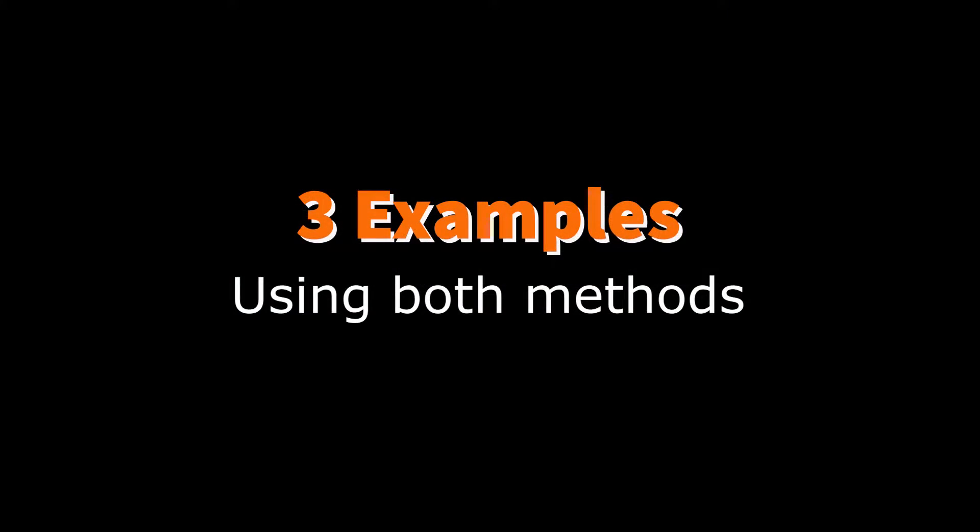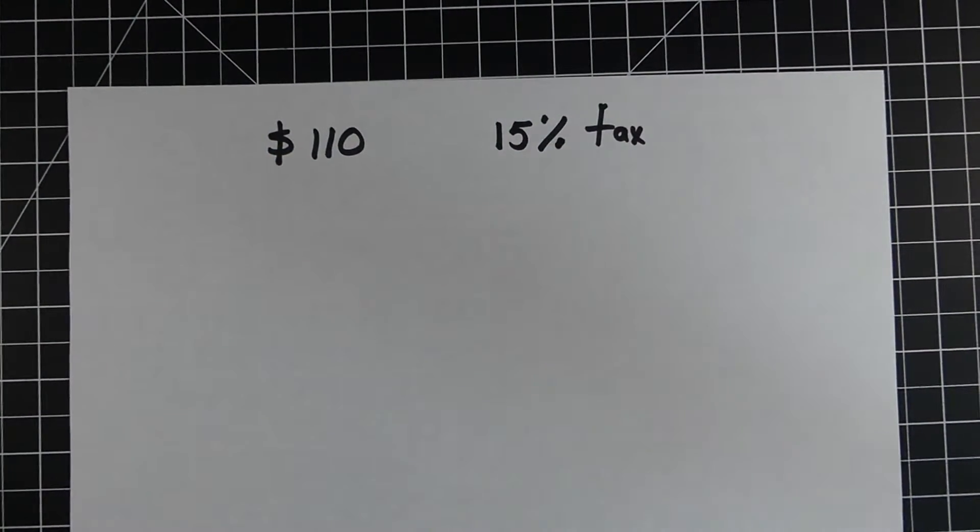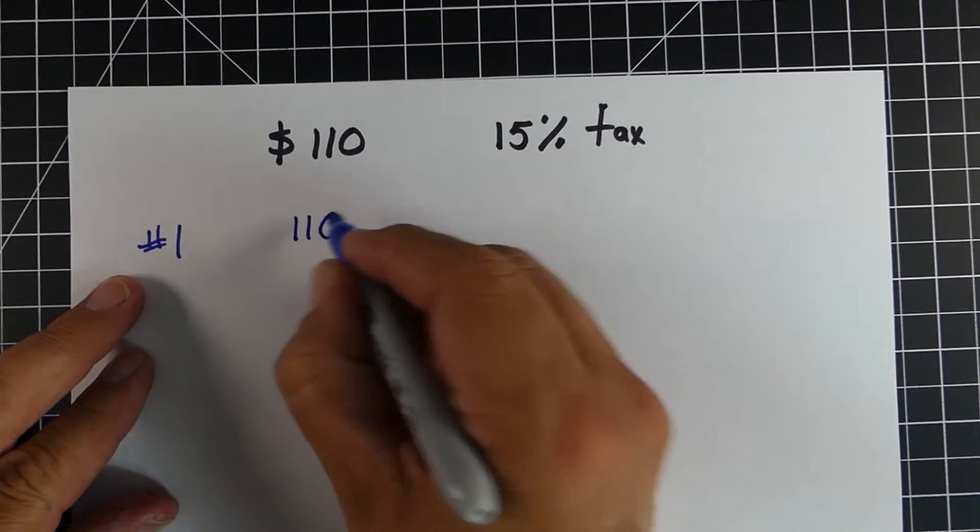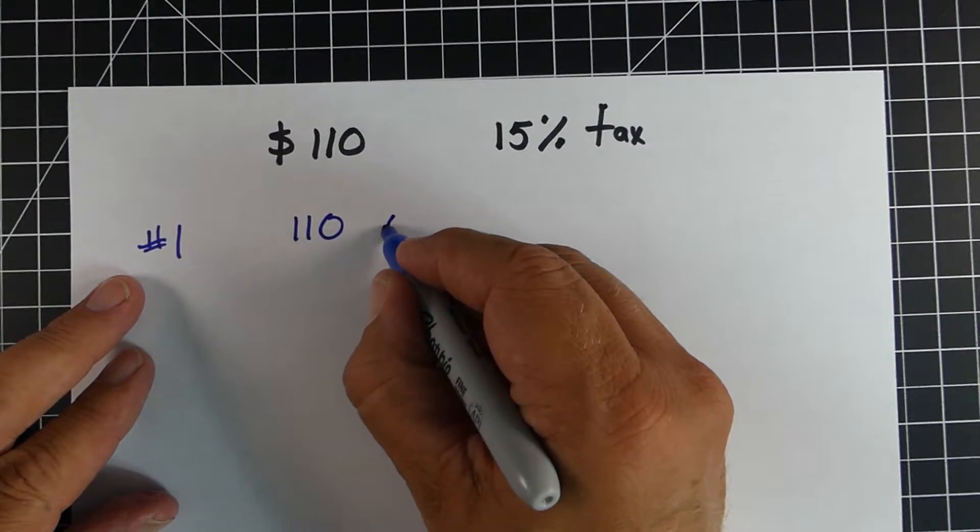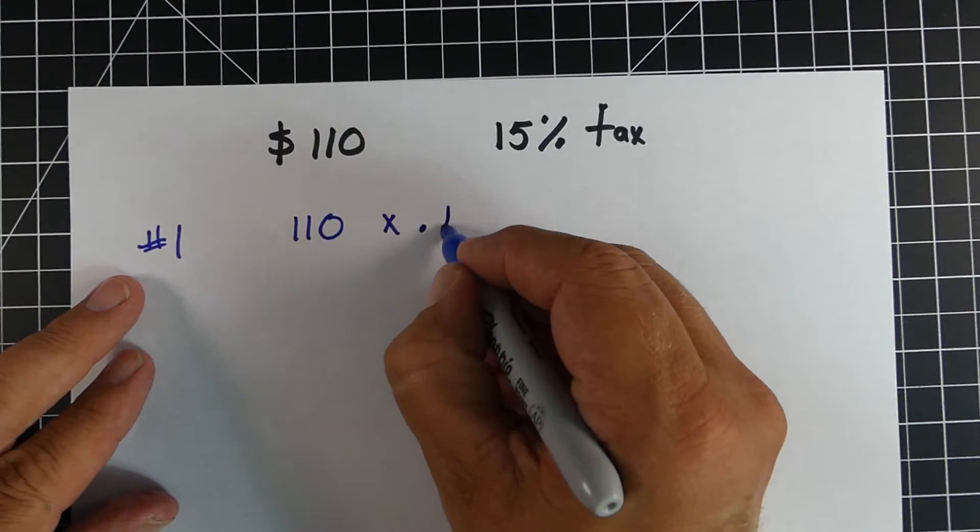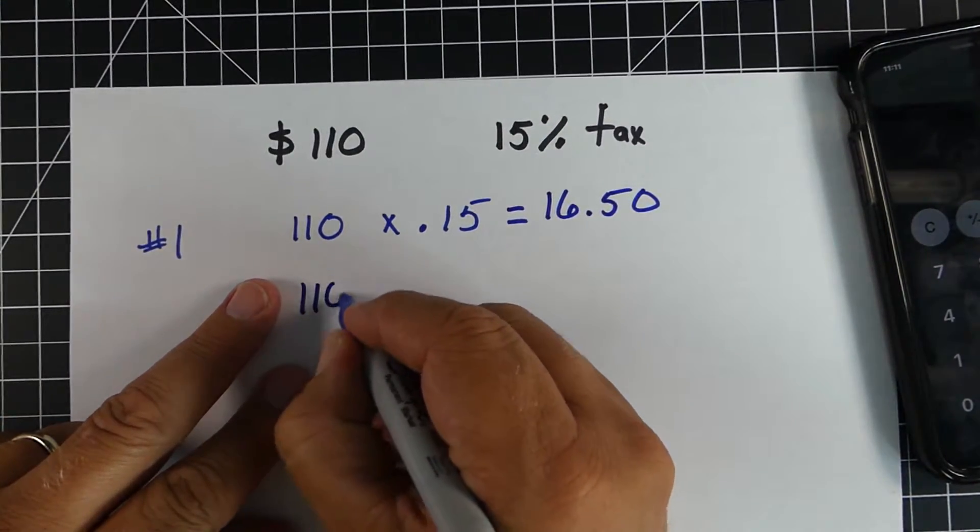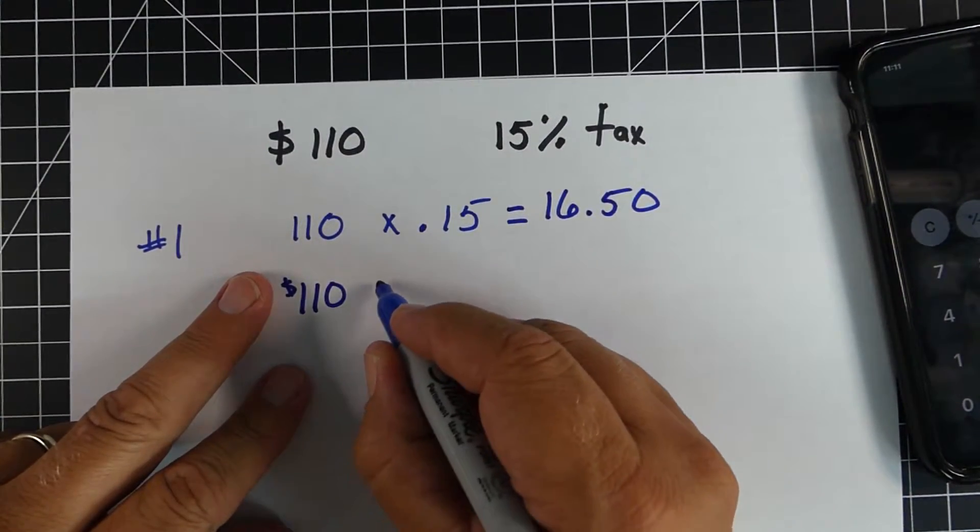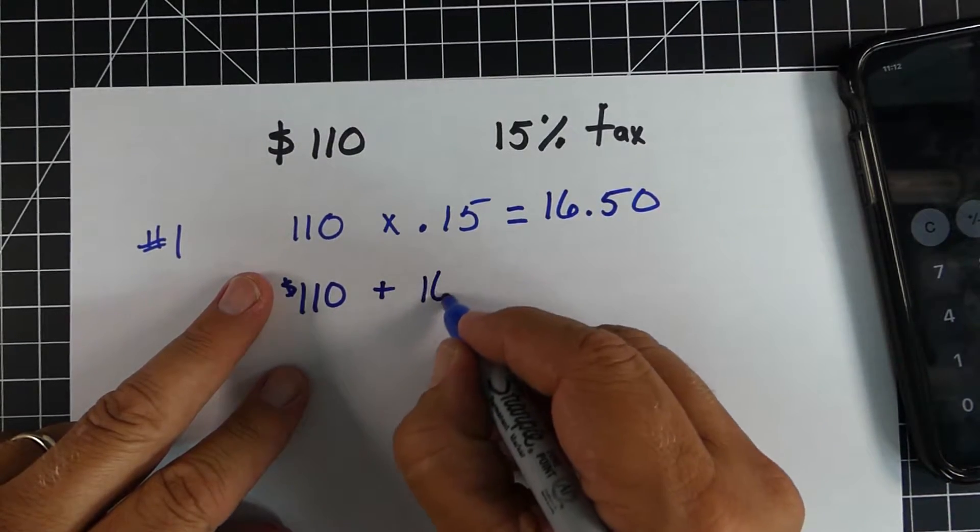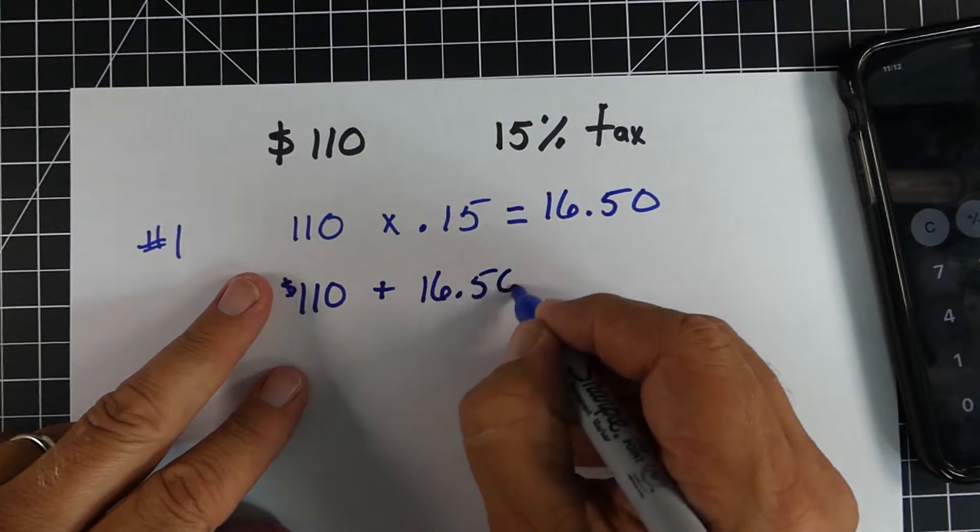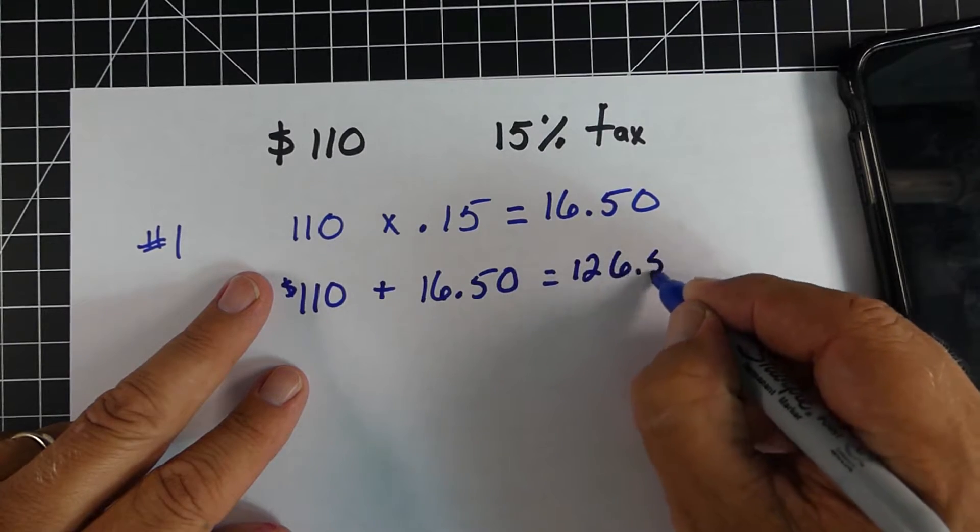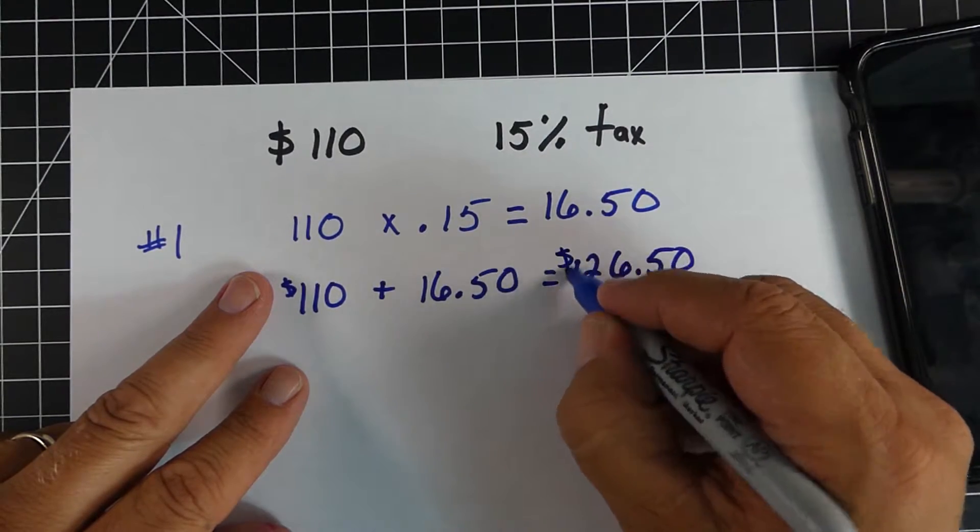Now here are three examples, and we're going to use both methods in each of these. So here's example number one. All right, we have a $110 item with 15% tax. So using method number one, we take our total cost, $110. We would multiply it by the decimal of 15%, which is .15, and we would get $16.50. We're going to take that $16.50, which is the tax, add it to the original amount, $110, and we get $126.50.